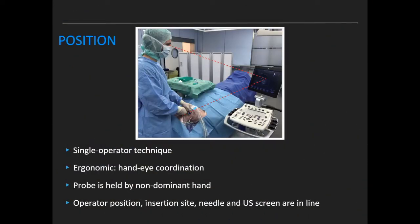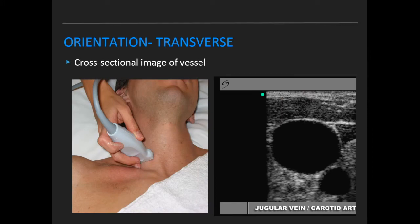The most important factor determining first-attempt success is good hand-eye coordination. This procedure is performed by a single operator, with the ultrasound probe held by the non-dominant hand while the procedure is done with the dominant hand. The operator, insertion site, needle, and ultrasound screen should all be in a single line. Prior to prepping and draping, orientate to the vessel in both transverse and longitudinal views.